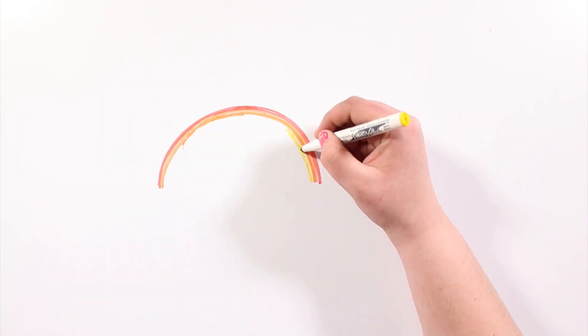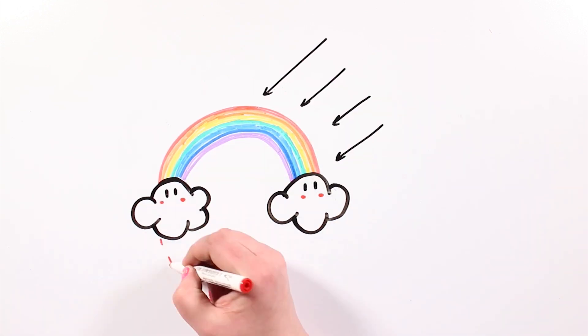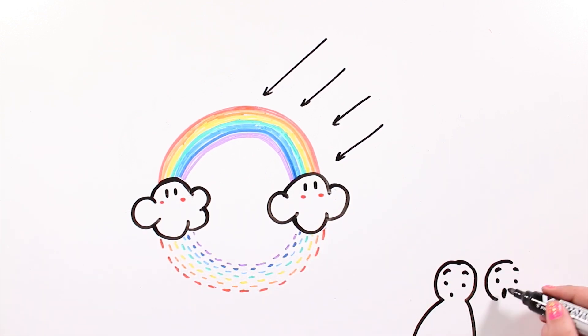The arch shape of the rainbow comes from the angle in which water molecules split the white light rays up. However, rainbows are actually whole circles; we just get to see half of it.